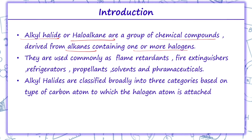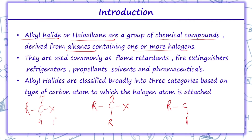Alkyl halides, on the basis of the type of carbon to which the halogen atom is attached, are basically of three types. If one alkyl group is attached, then it is a primary halide. If the halogen is attached to a carbon already attached to two alkyl groups, it is secondary. If the halogen is attached to a carbon attached to three alkyl groups, it is a tertiary alkyl halide.